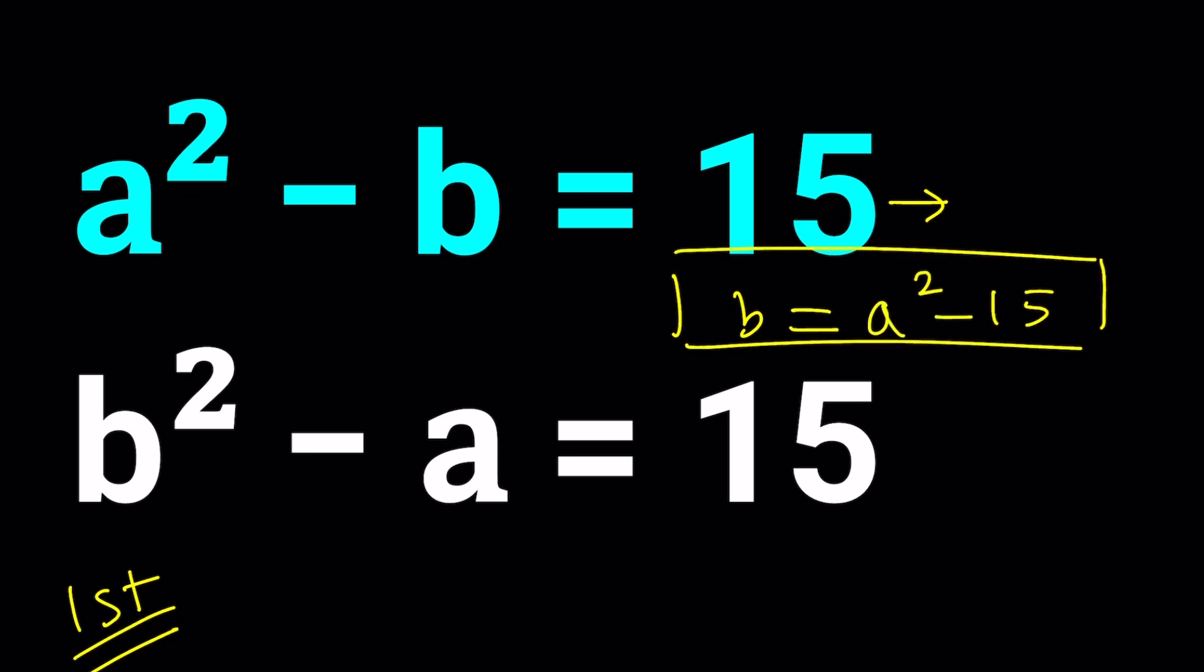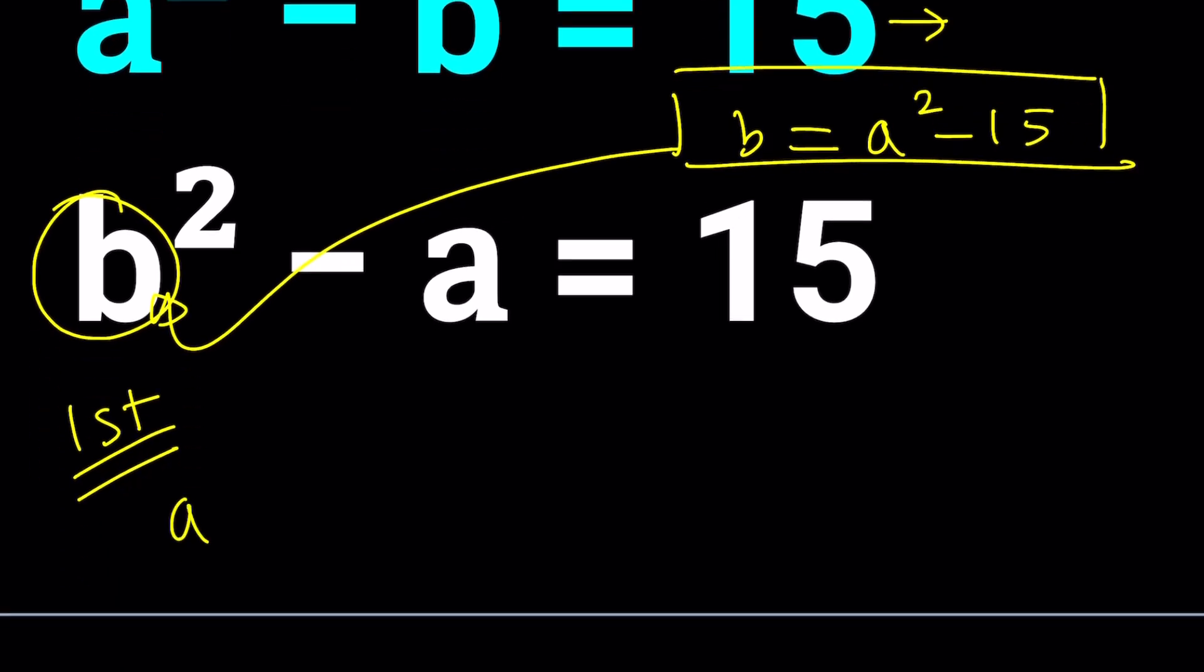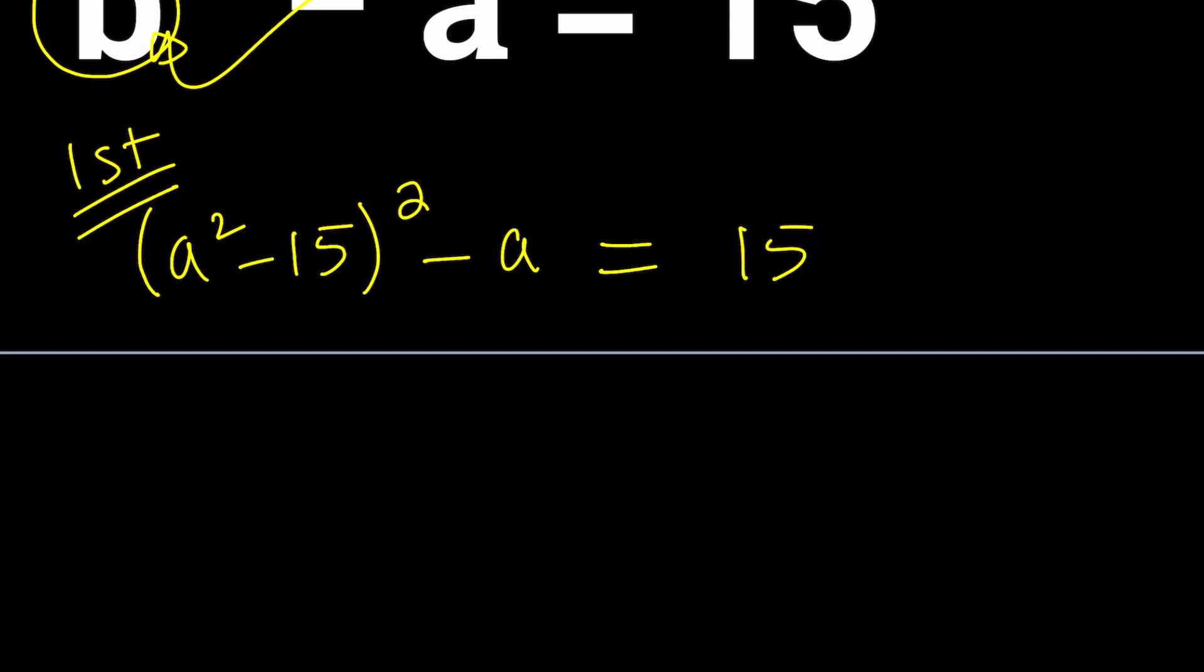b would be a squared minus 15. And that's something I would like to substitute here. Make sense? So let's go ahead and replace b with a squared minus 15. Then I'm going to go ahead and square that. Subtract a from it and set it equal to 15. Nice. Looks good, right? Well, this is going to be quartic. So it's not going to be that nice.